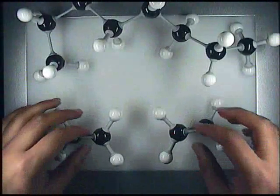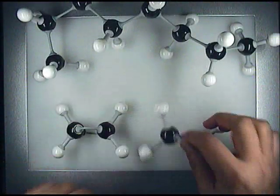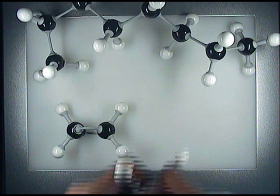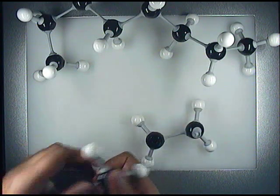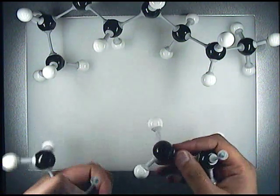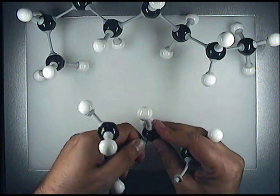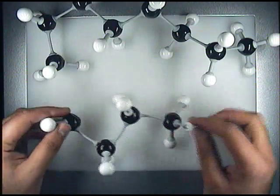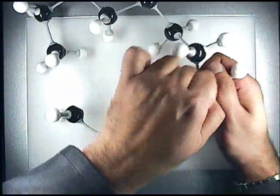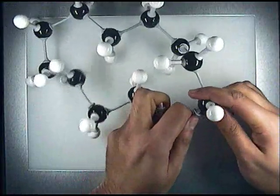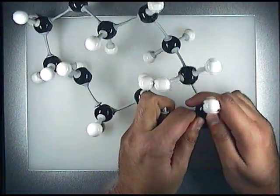Alkenes such as ethene are products of cracking. In addition polymerization, the double carbon covalent bond is broken open and the single bonds form to make a chain of ethenes. In this way, a molecule called polyethene is produced.